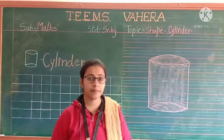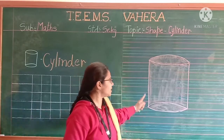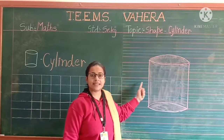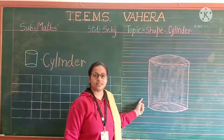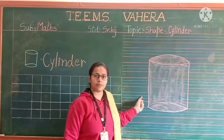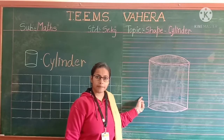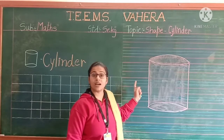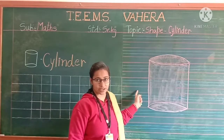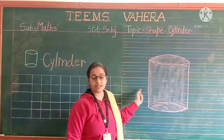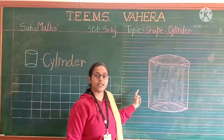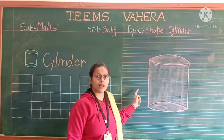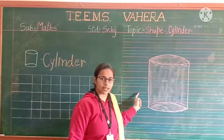Kaunsa sikheengi pata hai? Look at here. This is cylinder — this is cylinder shape. A cylinder is a 3D shape. Cylinder kaunsa shape hota hai? 3D shape hota hai. Wo round ka 3D shape hota hai.